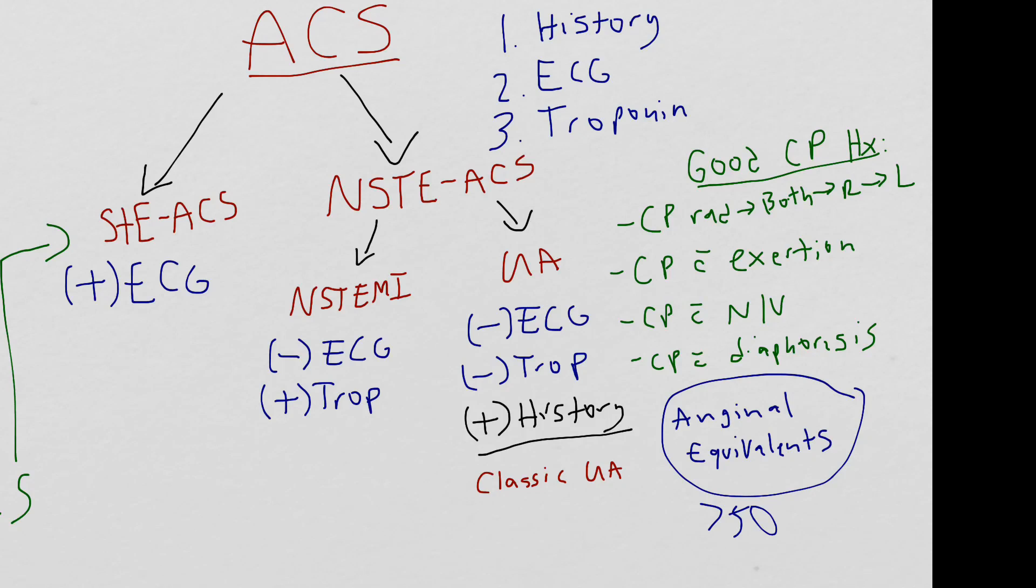Since obtaining a history can be very subjective at times, we had to develop a validated scoring system to help us determine the patient's risk for unstable angina. That scoring system is the heart score. The heart score is a prospectively validated clinical decision tool that tells you a patient's risk for major adverse cardiac event at six weeks. And a MACE, or major adverse cardiac event, is defined as an all-cause mortality, myocardial infarction, or coronary revascularization.